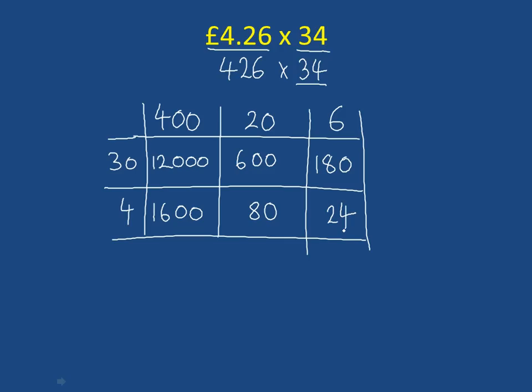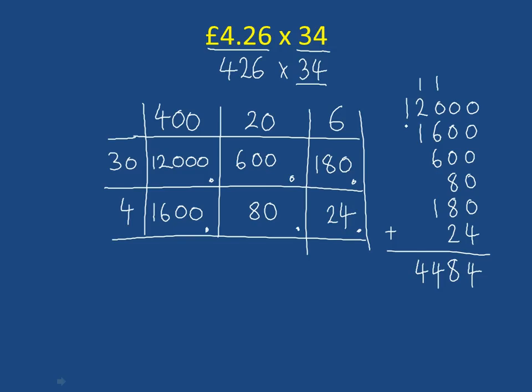So now what we do is we take these 6 numbers in our grid and we add them up. So we have 12,000, we have 1,600, 680, 180, and 24. So we're adding up these numbers carefully in columns. So going down here, we have 4. Going down here, we have 8, 16, 17, 18. So we put an 8 there and we carried a 1. So we have 1, 7, 13, 14 in this column. Put a 4 there, carried a 1. So we have 1, 2, 3, 4 in this column. And finally, 1 on its own at the end.